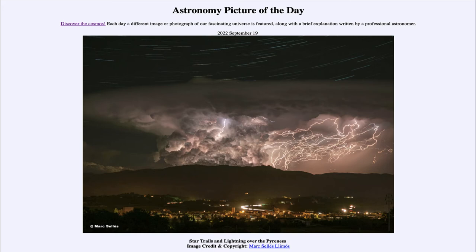All that lightning did not go off at once, but over a period of time — in this case six minutes. When we take a long exposure like that and we have stars in the image, the stars will appear to move. That is because we are on Earth, and Earth is rotating. We don't notice our Earth rotating very easily, but we can see that motion reflected in the stars up above.